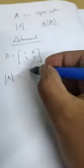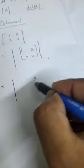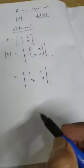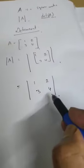Say A is a square matrix [1, 2; 3, 4]. We can find out the determinant of A — that means the determinant of this square matrix [1, 2; 3, 4]. We call this a determinant of order 2, meaning it is the determinant of a 2×2 matrix. If it is a 3×3 matrix, we call it a determinant of order 3.